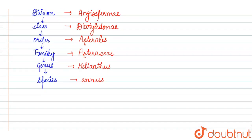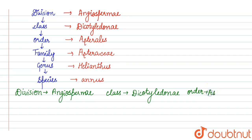So our final answer will be the second option, which is Division is Angiospermae, Class is Dicotyledon, Order is Asterales, Family is Asteraceae.